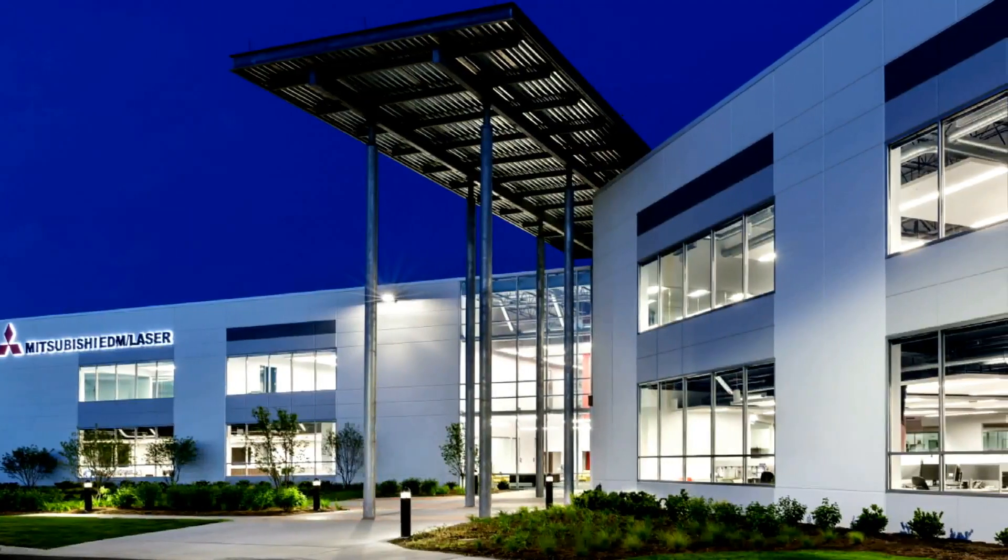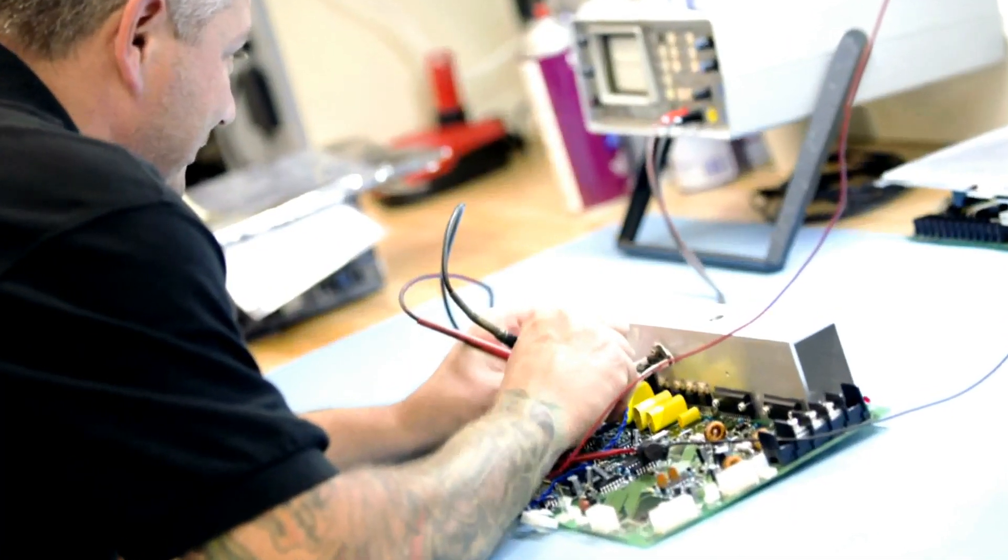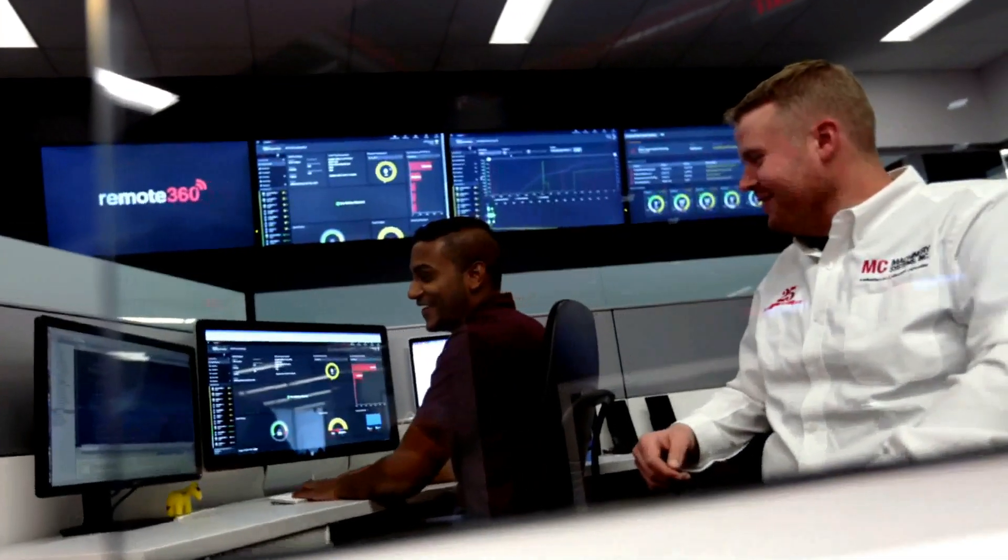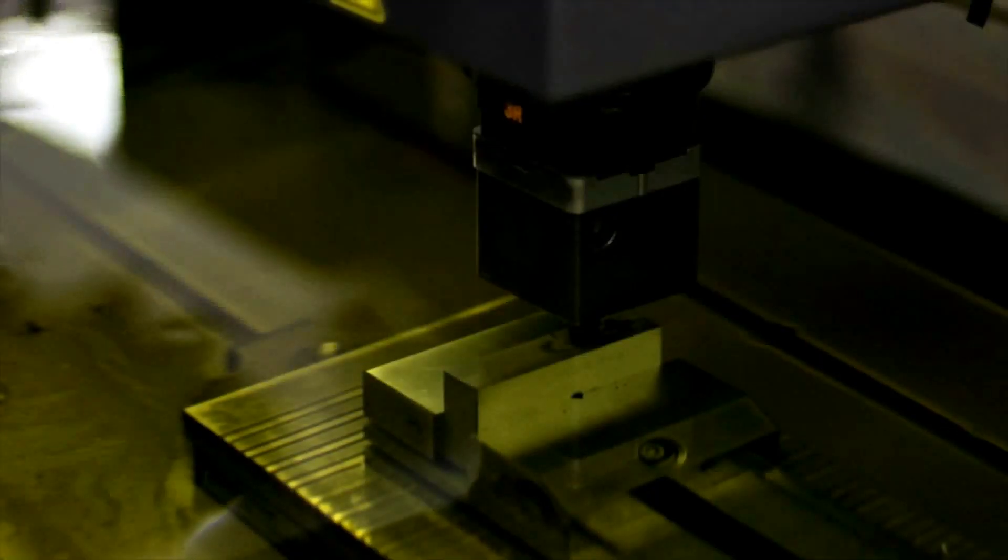The MV Series is not just a linear machine, it also provides lower operating costs, reduction in cycle times, and up to a 30% finer finish than previous models. Perhaps just as beneficial as the MV's optimized features is the support that comes with each machine. Thanks to a widespread expert service network, Mitsubishi representatives are always at the ready, providing support well beyond initial installation.